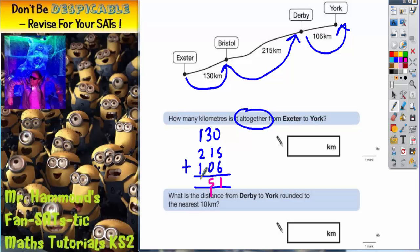And then 1 plus 2 plus 1 is 4. So the correct answer should be 451 kilometres.